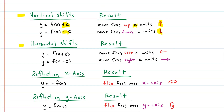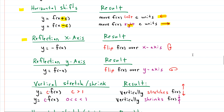We also have horizontal shifts — moving left and right. This happens when you add a constant inside the function, and you move in the opposite direction of the sign. So if you have plus C, you move left C units; if you have negative C, you move right C units. For reflections about the x-axis, if you multiply outside by a negative, you'll flip it about the x-axis. If you reflect about the y-axis, you multiply by a negative inside the function, rotating it horizontally around the y-axis.